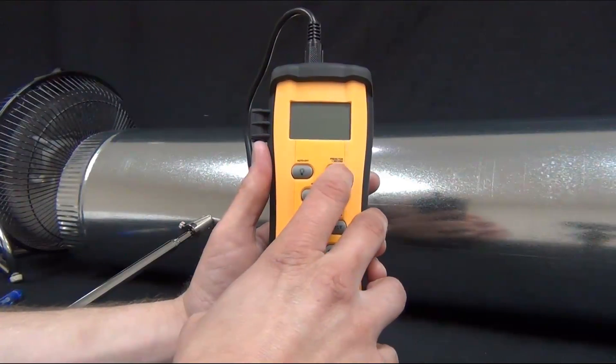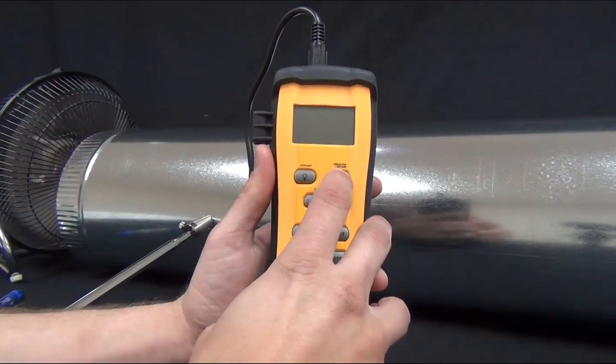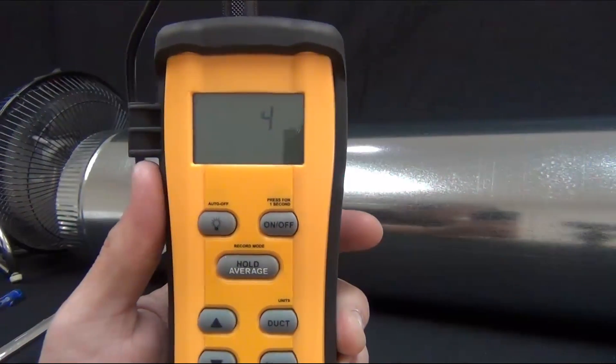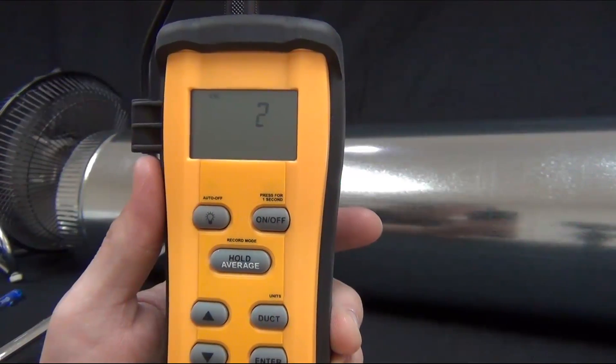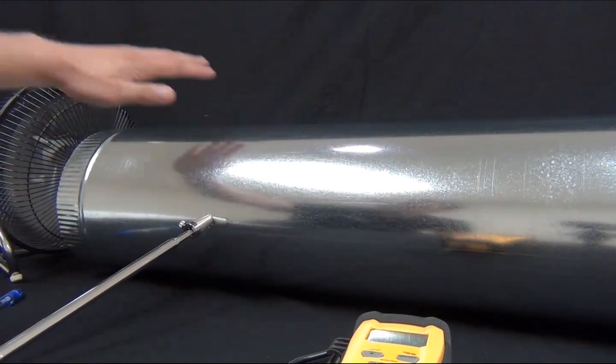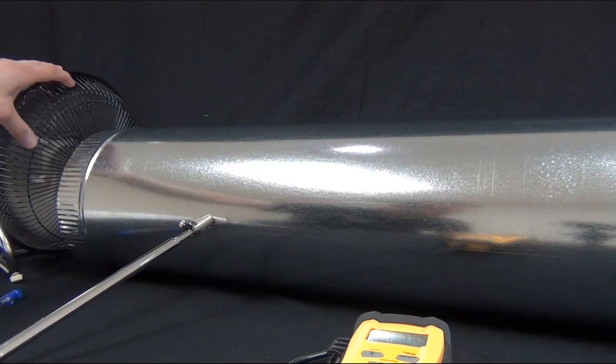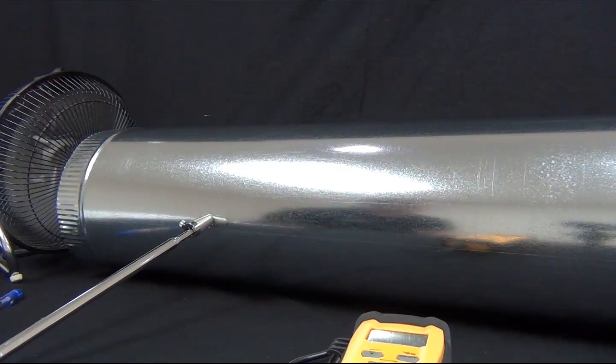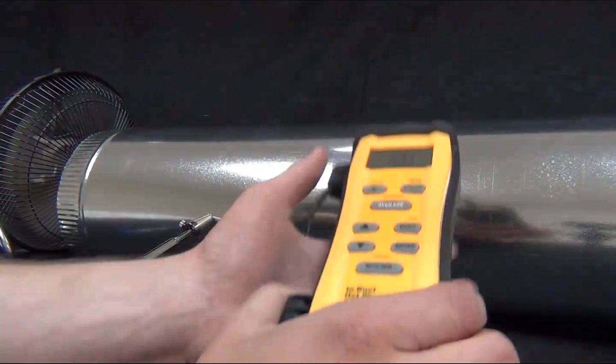Now I want to show you the display features and buttons of the STA-2. When you first turn it on, it has a five second warm up period. Behind me I have an eight inch duct with a little fan blowing into it to create some air flow, and the wand attached to a cone just so I get a constant air flow as I show you the features.